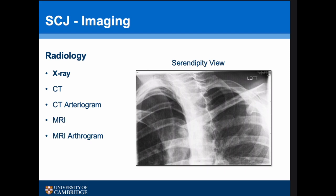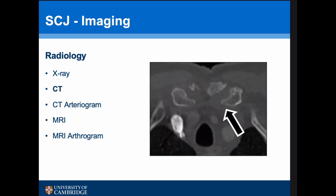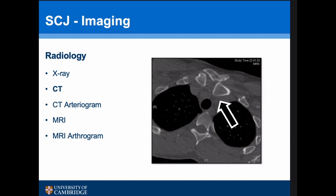The most useful investigation is probably a CT scan, which is good at looking at osteoarthritis and dislocated joints. However, it's not so good at looking at a joint that has previously been dislocated and relocated, because it is a bony study and doesn't look at soft tissues.